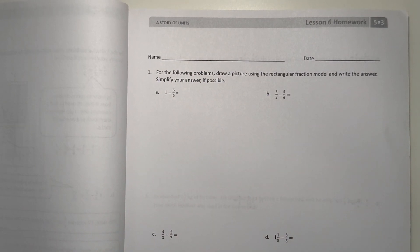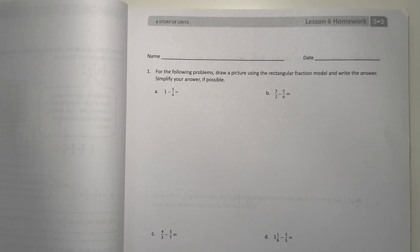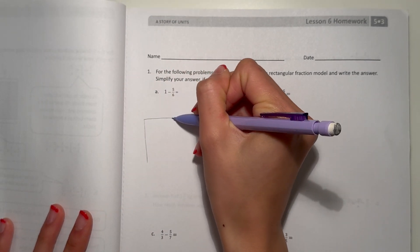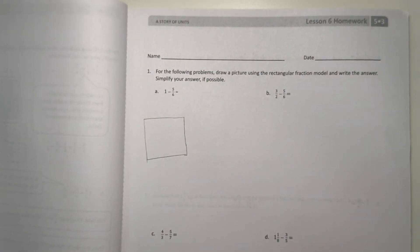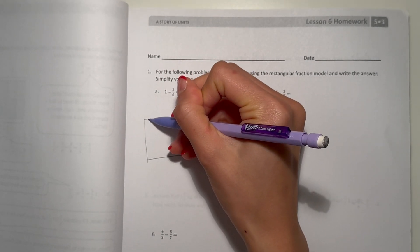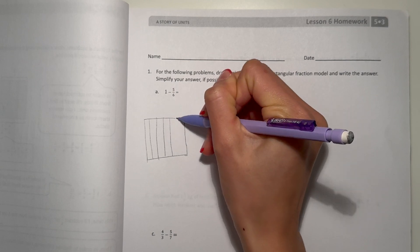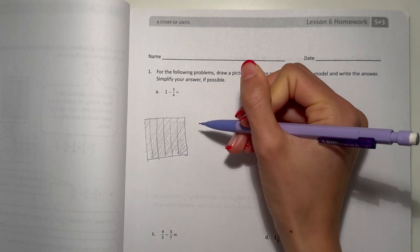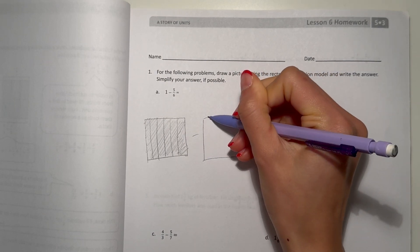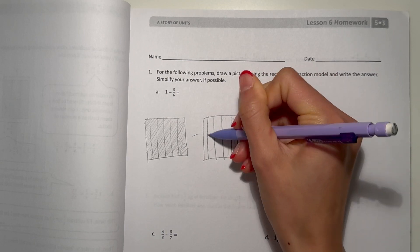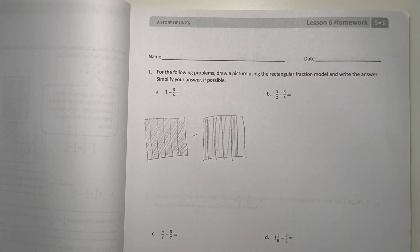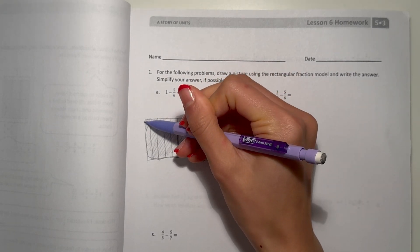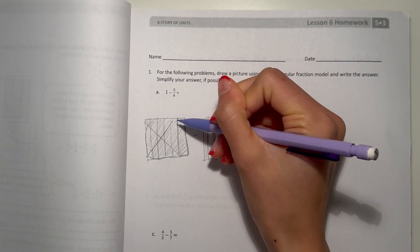Problem A: we have 1 minus 5/6. So 1, it just says 1, so we can assume that it's 6/6 because 1 whole can be anything really. So just shade in everything. Minus 5/6, so we've shaded in this part. This is what we're subtracting, that means we are taking away this whole chunk. We can X out to show, and this is how much we have left. So we have 6/6 minus 5/6 equals 1/6 remaining.